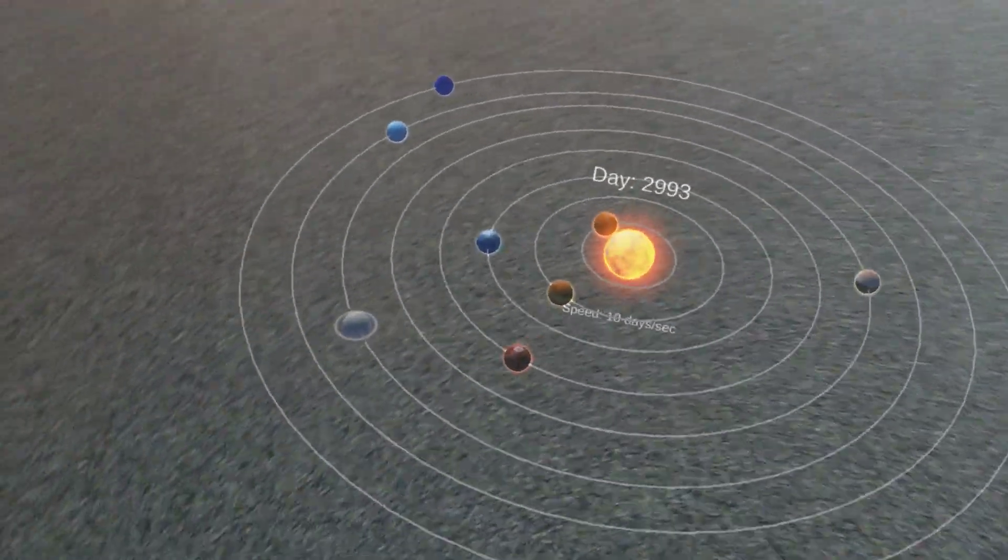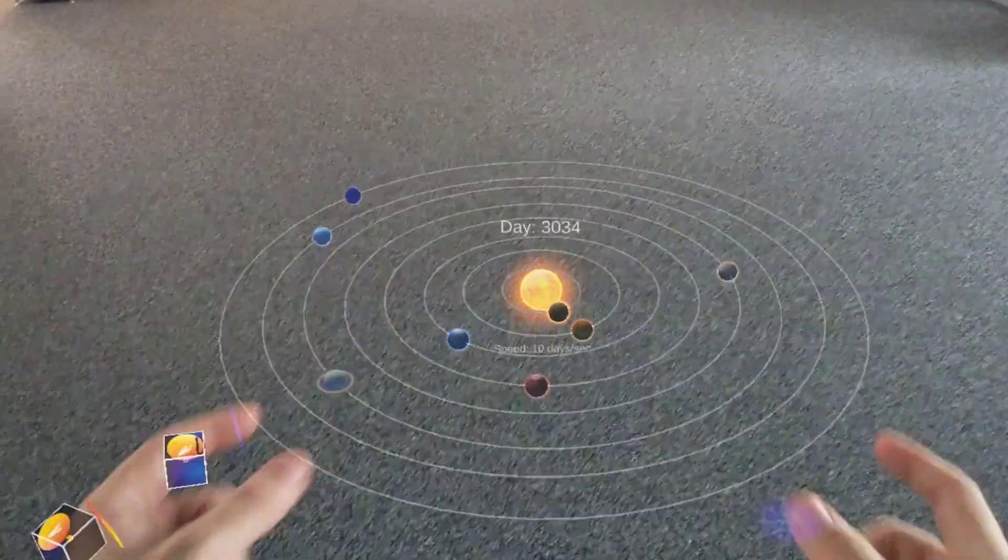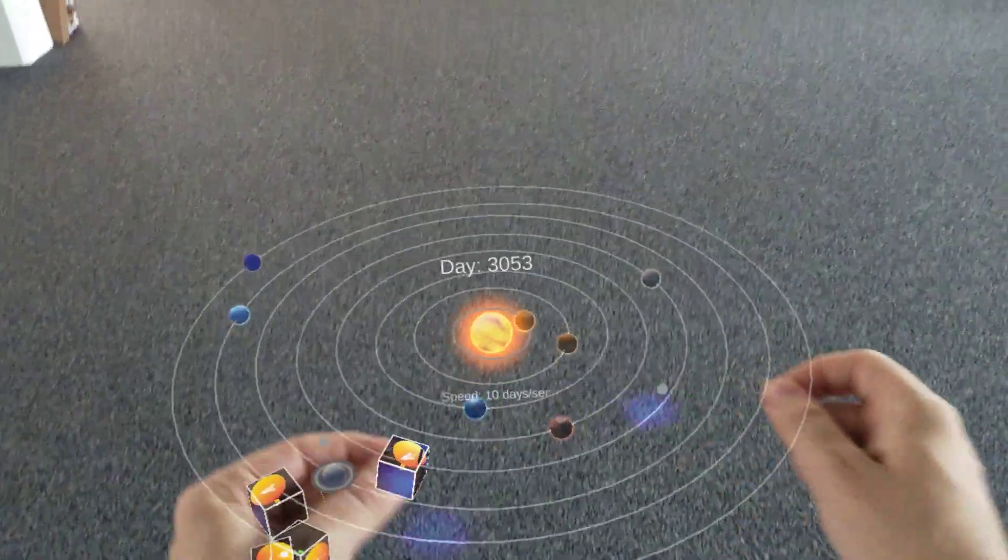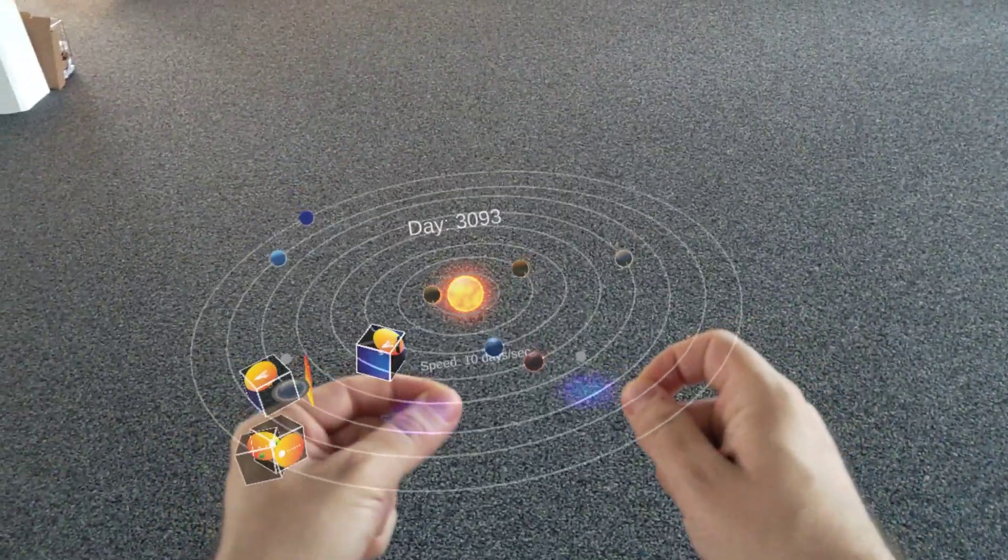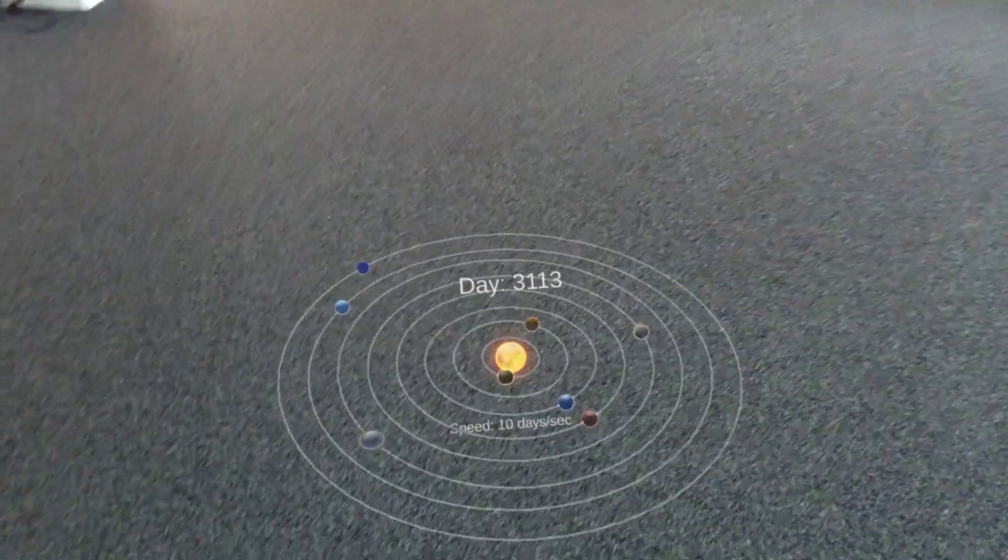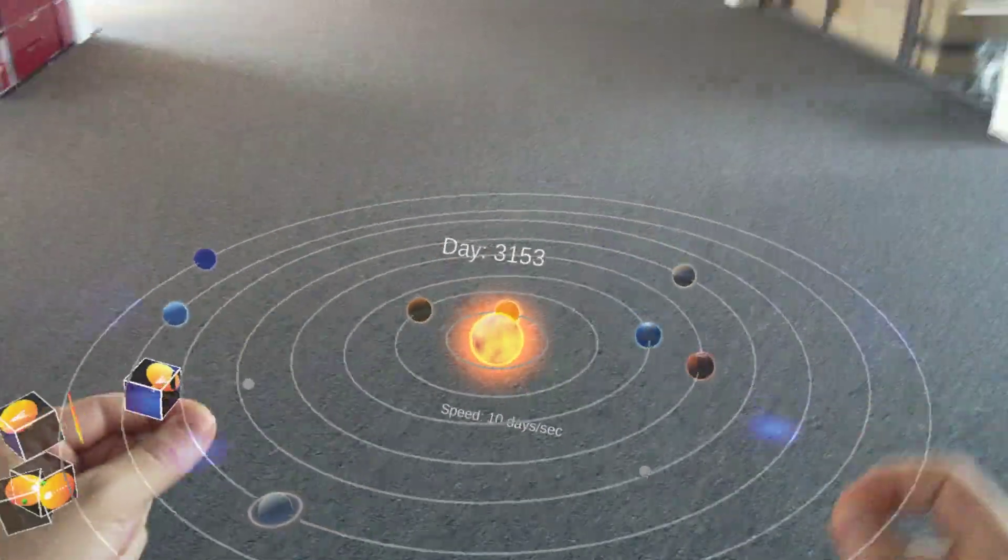So this is a Solar System demo we did for the HoloLens 2. This could be an example how in the future we can learn about science, how we can explore our environment and things we cannot explore by ourselves.